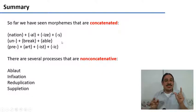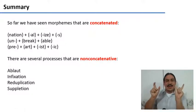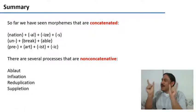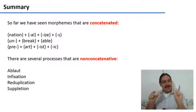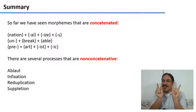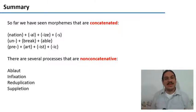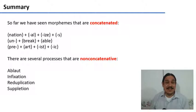So again, these are chains of concatenated morphemes: un-break-able, pre-art-ist-ic. So far we have only seen them like this.